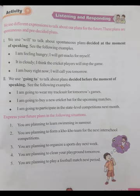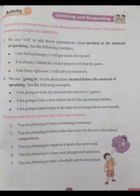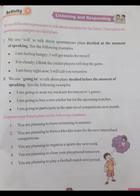We use 'going to' to talk about plans decided before the moment of speaking. Examples: 'I am going to wear my track suit for tomorrow's games.' 'I am going to buy a new cricket bat for the upcoming matches.' 'I am going to participate in the state-level competitions next month.' Express your future plans: 1. You are planning to learn swimming in summer. Answer: I am going to learn swimming in summer. 2. You are planning to form a Kho Kho team for the next inter-school competitions. Answer: I am going to form a Kho Kho team for the next year's inter-school competitions.